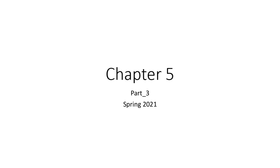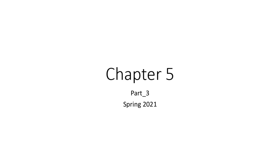They don't really realize what these numbers mean when they do the equations. We will discuss the exam in the next lecture. Today we'll do chapter 5 and finish it, and we'll do chapter 6 in the next lecture. So chapter 5 here is still the transmission line parameters, the ABCD parameters.